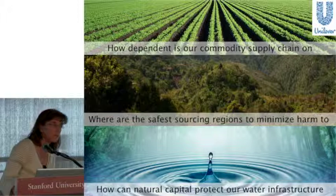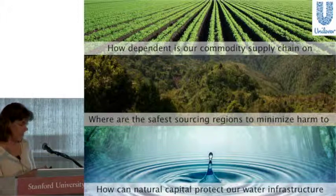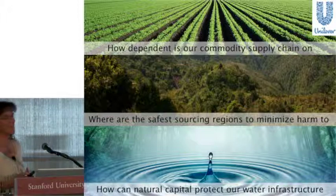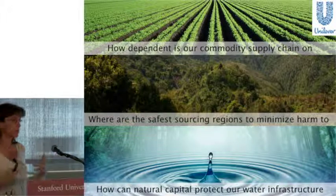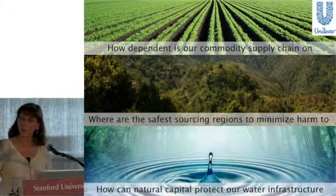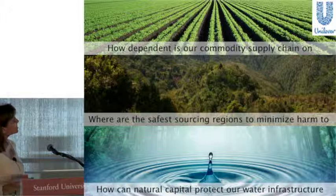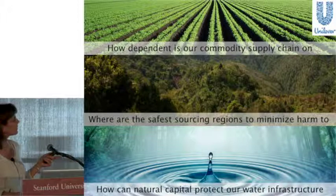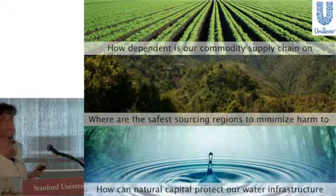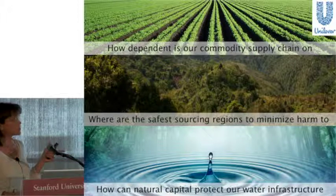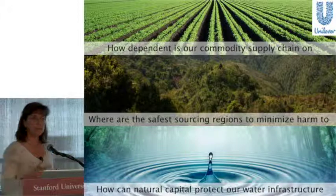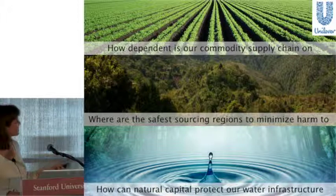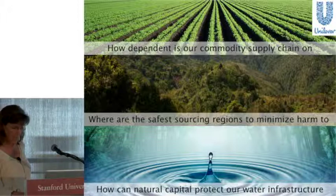The final example is a newer engagement with Unilever, who owns Ben & Jerry's among many other things and has a huge global reach in agricultural products. Becky Chaplin-Kramer has led this work. Three key questions: How dependent is their commodity supply chain on ecosystem services? Where are the safest sourcing regions around the world to minimize harm to ecosystems or people? And how can natural capital protect their water infrastructure investments? I'll focus on the supply chain sourcing question.